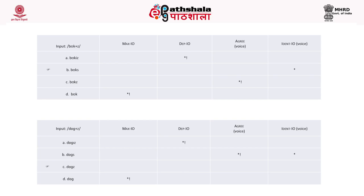Similarly, for 'dogs,' candidates (a), (b), and (d) incur fatal violations: in (a) there is epenthesis; in (d) the plural morpheme is deleted; and in (b) the voicing is not agreeing — /s/ does not agree with /g/ with respect to voice, and IDENT-IO is also violated as /z/ becomes voiceless /s/. Candidate (c) has no violations at all, so (c) is the most optimal candidate, giving us 'dogs.'